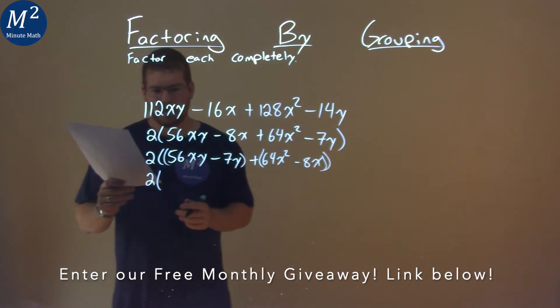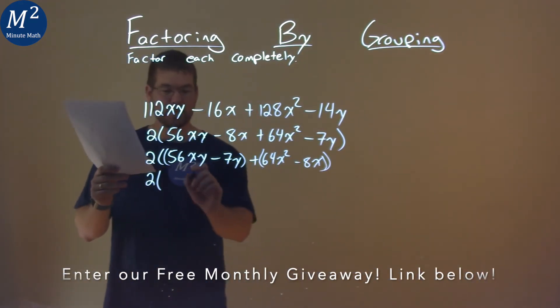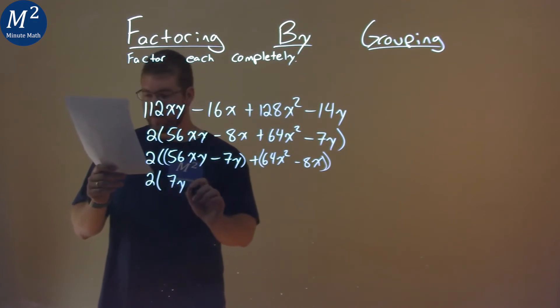2 comes down, and 7 goes into 56xy and 7y, and that's just going to be 7y. So I pull out a 7y, I'm left with 8x minus 1.